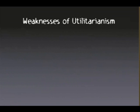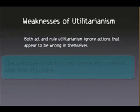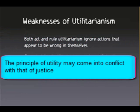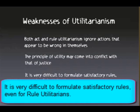What are the weaknesses of utilitarianism? Both forms — act and rule utilitarianism — can ignore actions that appear to be wrong in and of themselves. The principle of utility may also come into conflict with that of justice: under utility, the greater good is what you're striving for, but under justice, you want to give to those who merit it, even if they're a minority. And finally, it's very difficult to formulate satisfactory rules, even for rule utilitarians.